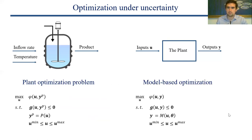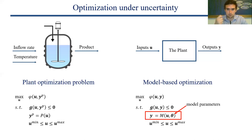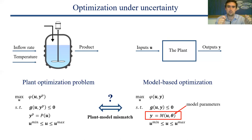The way we would optimize the plant problem is with a model — this is model-based optimization. Notice that the model-based problem is very similar to the plant problem. The key difference is that the dynamics are not given by the real plant but by a model, which takes inputs u, is parameterized by some parameters θ, and outputs predicted y's. I don't put a superscript p here because this is a predicted y — something I think will happen given my model. As we know, we have plant-model mismatch: our models are never fully correct, and this means we will not reach the true optimum of the plant.